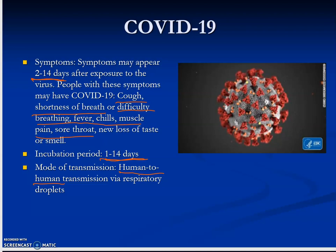People with COVID-19 symptoms usually have a cough and shortness of breath — that seems to be a very common theme, to the point where people were really afraid they just can't breathe. Other symptoms include difficulty breathing, fever (often a high fever), chills, muscle pain, sore throat, and a new loss of taste or smell, which also seems to be a common theme.